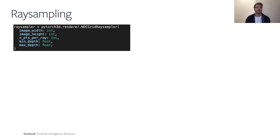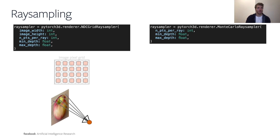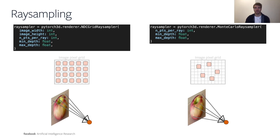For PyTorch3D we have implemented a bunch of ray samplers. The most basic one is the NDC grid ray sampler, which samples individual rays on the image pixel grid and is suitable for rendering full images. The second ray sampler is called the Monte Carlo ray sampler, which is suitable for architectures that are very memory heavy. It randomly selects individual 2D locations in the image pixel grid and emits rays from those, so it only renders a subset of the image.